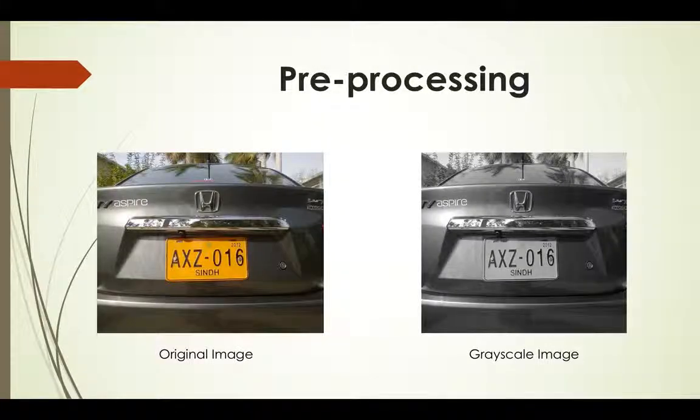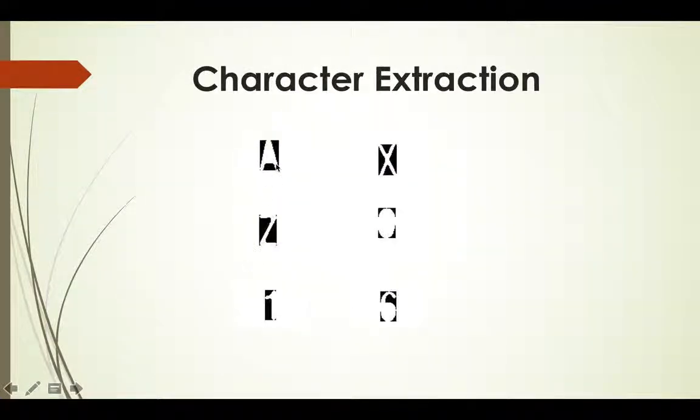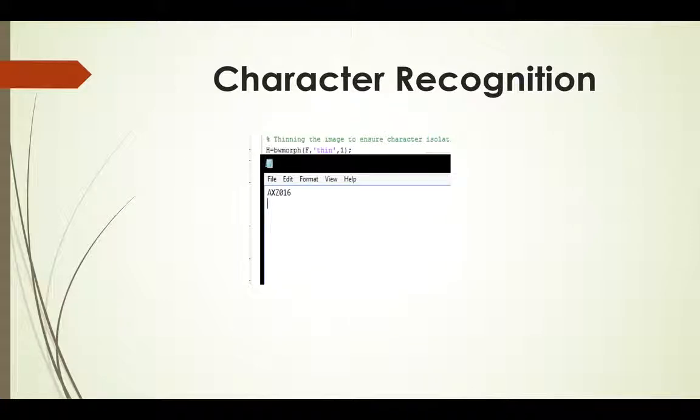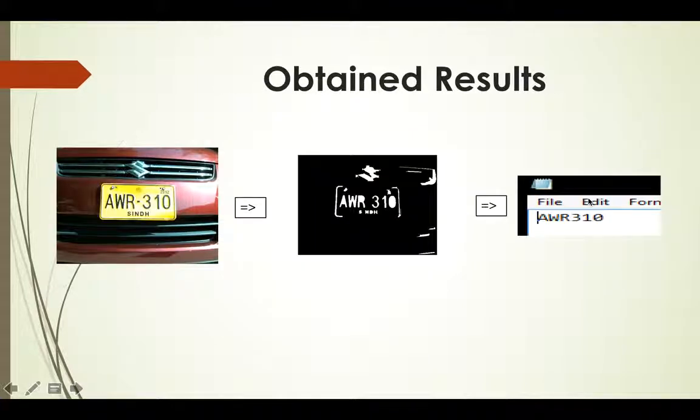For this given input where you can see the number is AXZ016, we get these following images: A, X, Z, 0, 1, 6. Though it's not very clear to the naked eye, since we follow template matching, it's easy to recognize them. We will see it when we demo the product later. This will be the output—I have written the output in a notepad file right now.